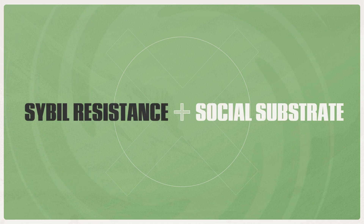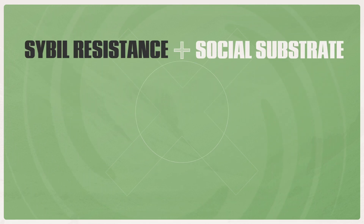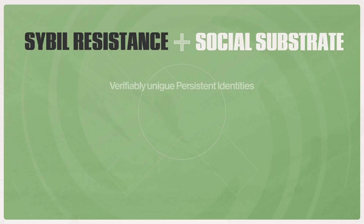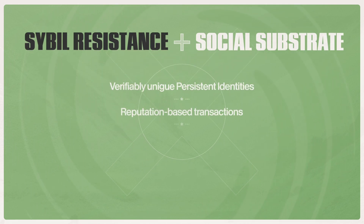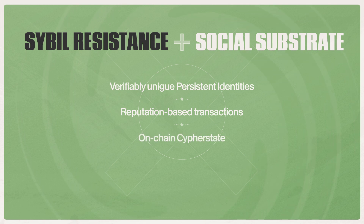To recap what we've learned so far, the presence of sufficient civil resistance and social substrate on Galactica Network allows verifiably unique, persistent identities to transact via reputation in an on-chain cipher state.